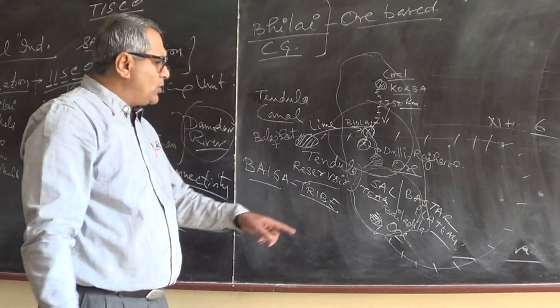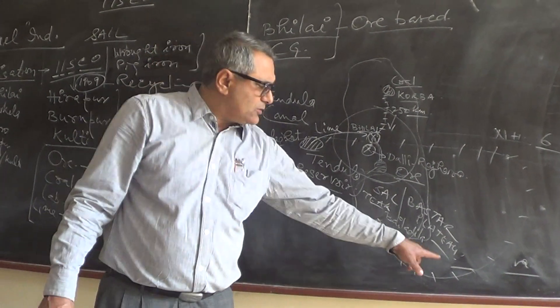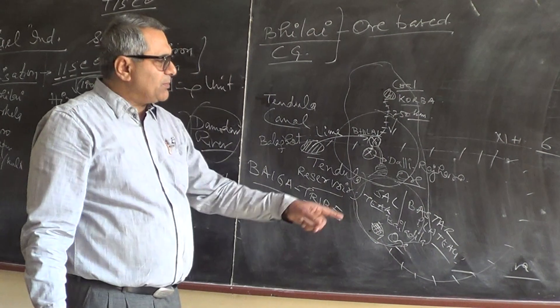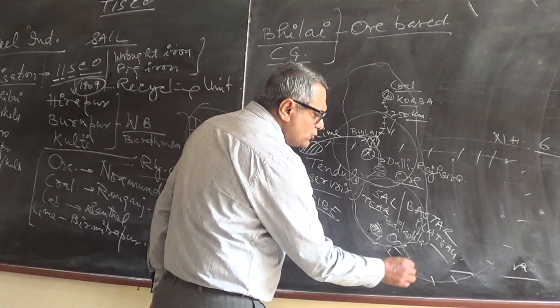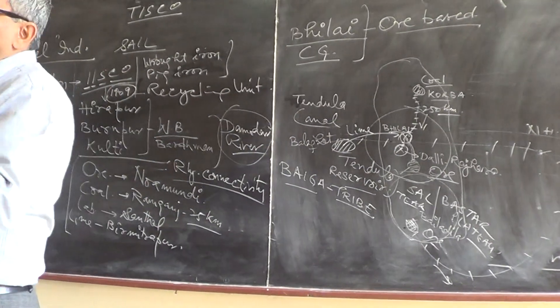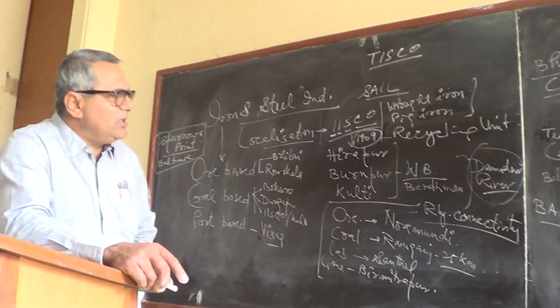Therefore whatever iron ore we extract from Bailadila, it goes to Vishakhapatnam first, then it is supplied to other parts. And this is basically for export. Most of the iron ore from Bailadila goes to Japan. Japan is the importer of Indian iron ore.